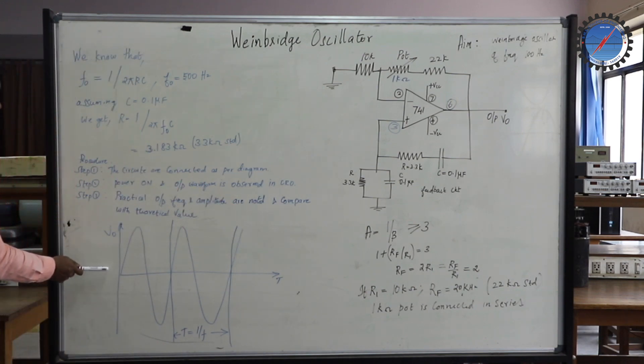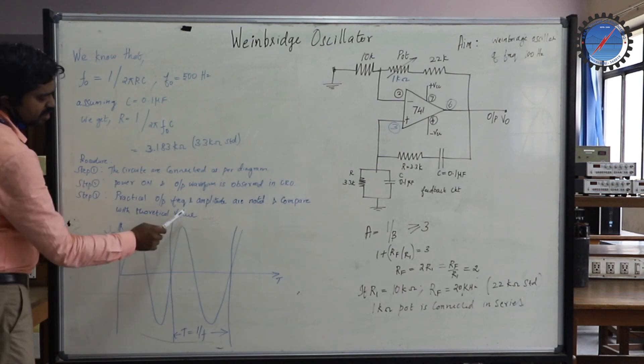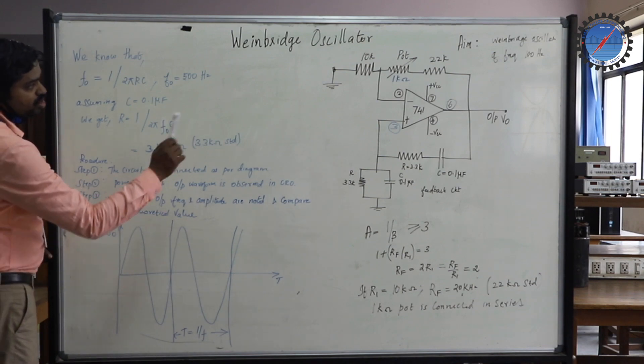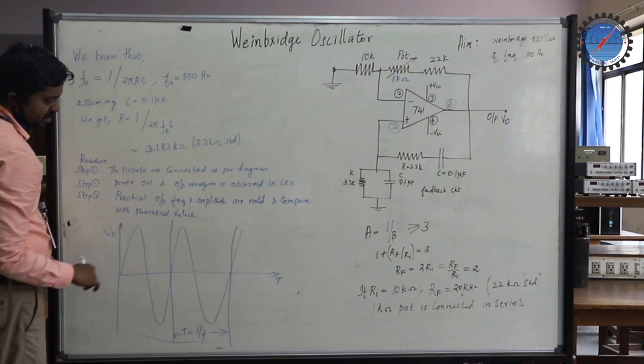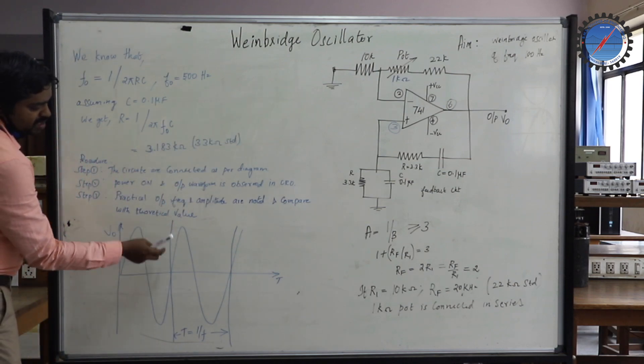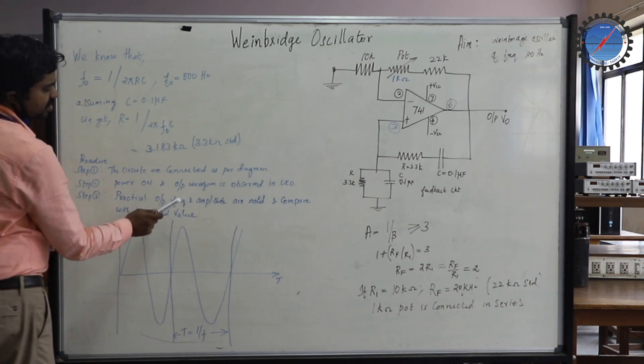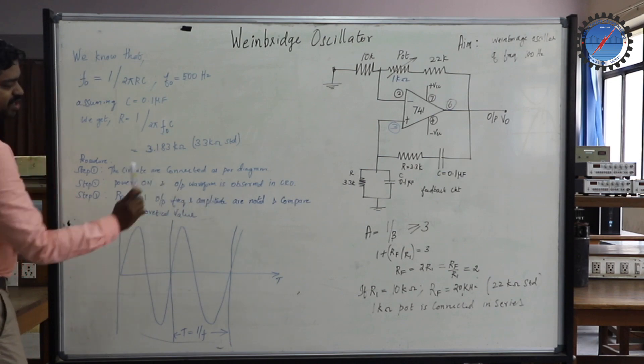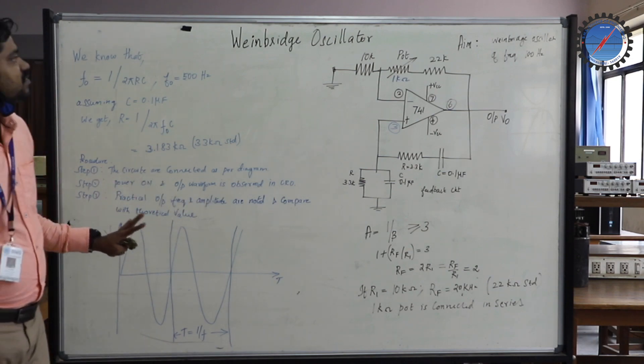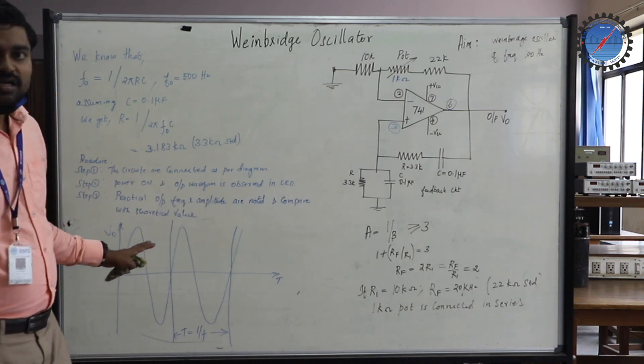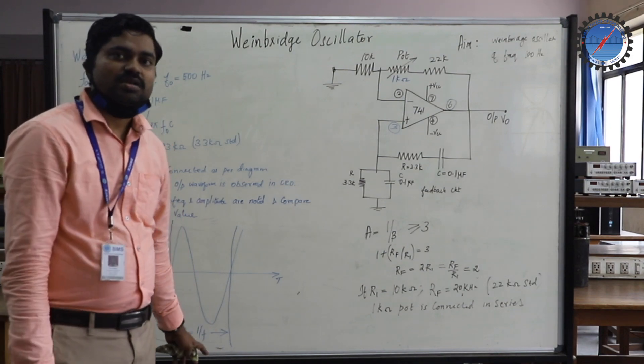You will get a signal like this output signal. If you vary the potentiometer, that is 1 kilohm, you can increase or decrease this particular magnitude. The time period T equals 1 by f. From this you can find the frequency, and amplitude you can measure. That's the Wien bridge oscillator. Let us see the hardware implementation of this particular experiment.